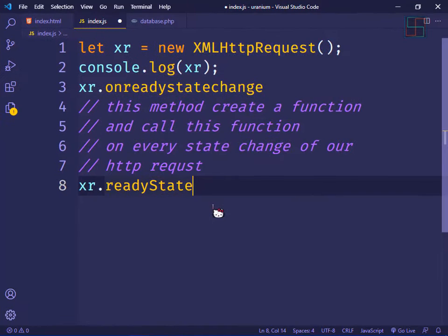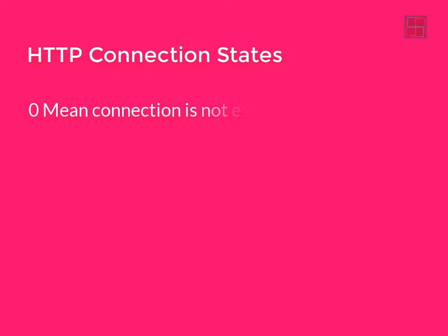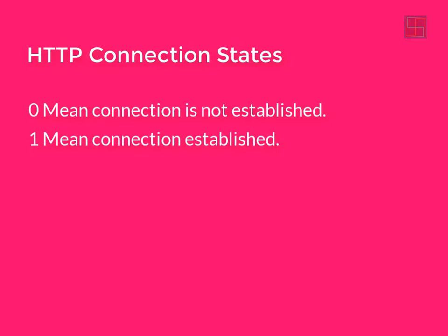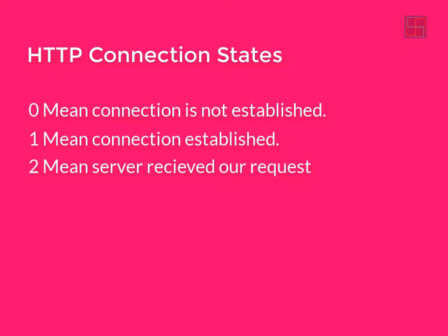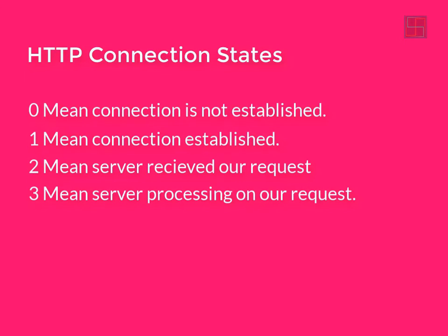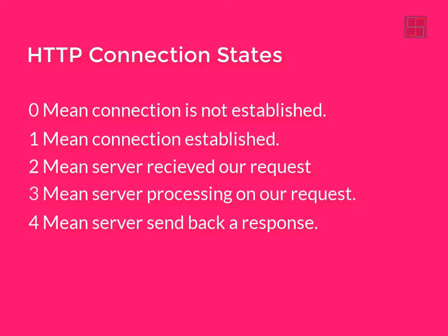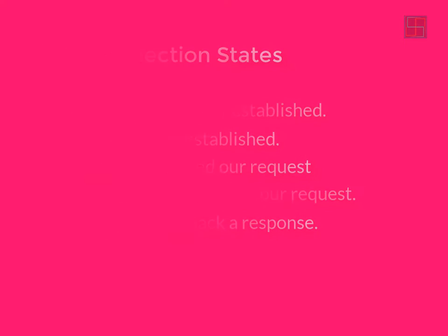There are five states of an HTTP request. State 0 means connection is not established. State 1 means connection established. State 2 means the server received our request. State 3 means the server is processing our request. State 4 means the server finished the process and sent back a response.